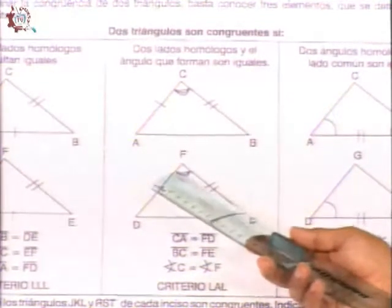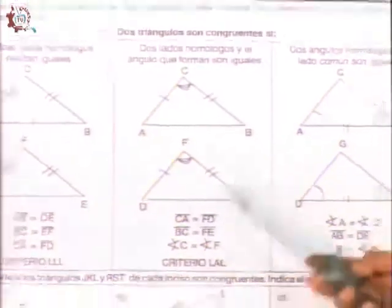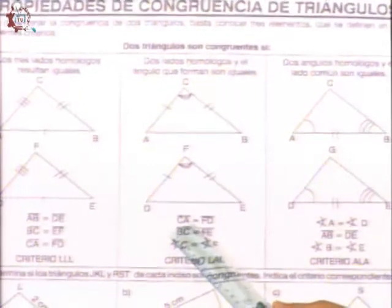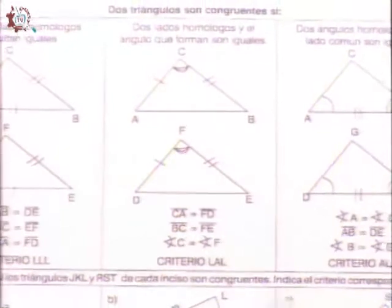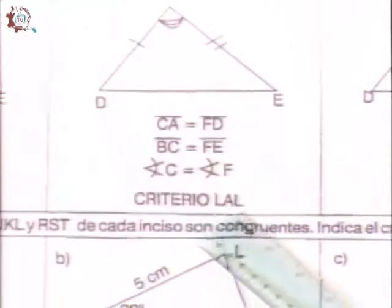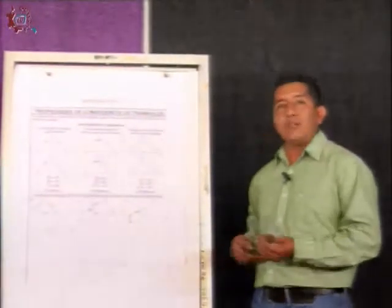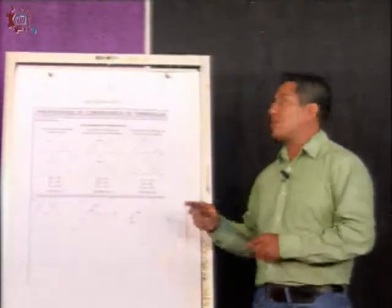Señalando también el lado DF, FE, y entre ambos formando un ángulo. ¿Cómo voy a determinar que se cumple esta congruencia bajo este criterio? El segmento CA debe ser igual al segmento FD. Por último, el ángulo C debe ser igual al ángulo F. Este criterio se llama lado-ángulo-lado, donde dos de sus lados son iguales y el ángulo que se forma entre ellos también. Si cumple con este criterio, podemos decir entonces que nuestros triángulos son congruentes.